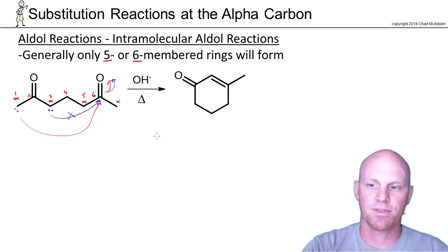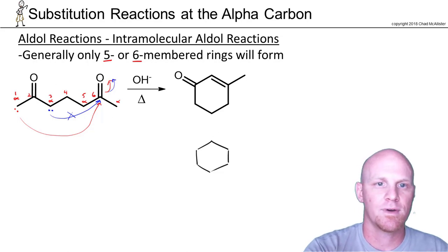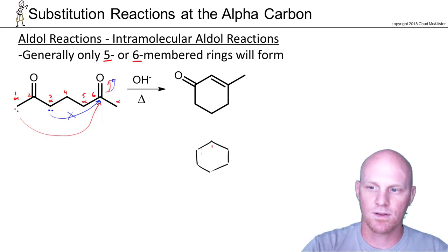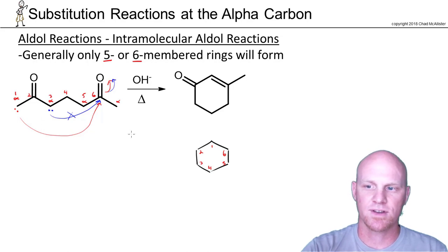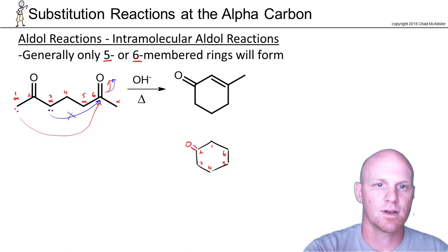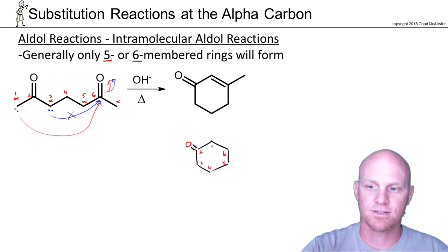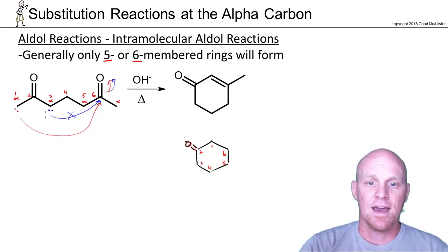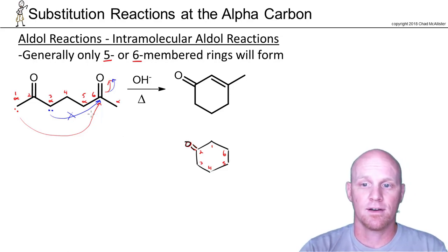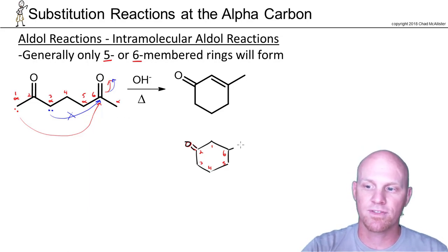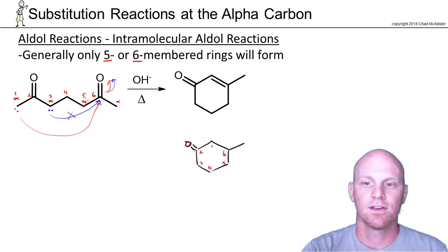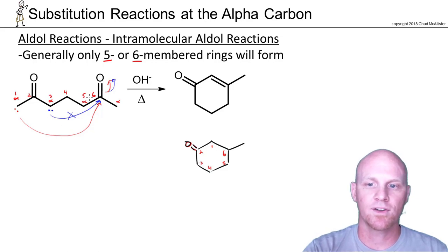I've already got the product drawn, and I can see it's going to be a six-membered ring. Going down the chain: one, two, three, four, five, and six. Carbon two is a carbonyl, so we'll draw that in. Carbon six has an additional methyl group coming off it that was not part of our ring.